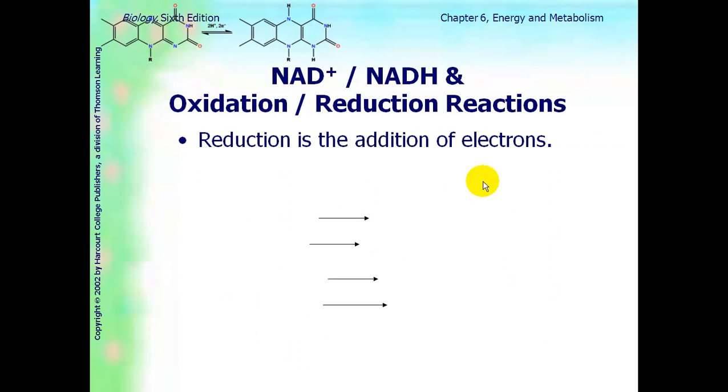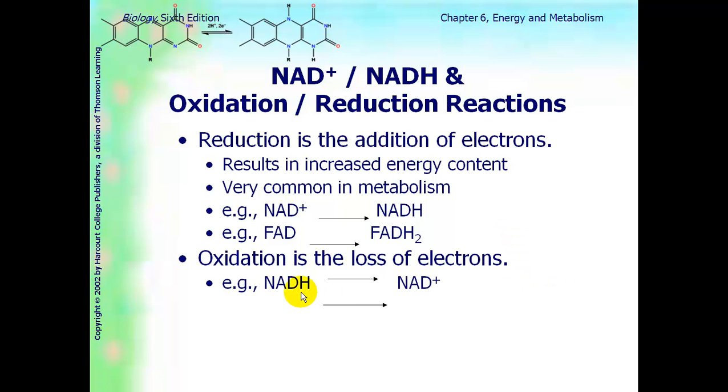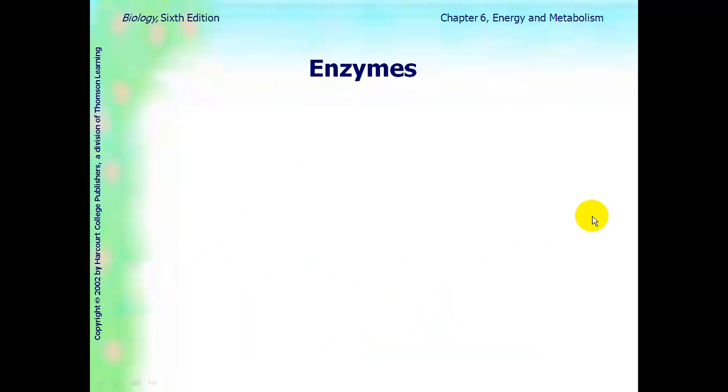So, these reactions that we're talking about are called oxidation and reduction. Reduction is the adding of electrons. Oxidation is the loss of an electron. For reduction, it results in increased energy. It's very common in metabolism. So, NAD plus would be reduced to NADH. FAD would be reduced to FADH2. And then oxidation is the opposite. It's a loss of the electrons. NADH can be broken down to NAD plus, and FADH2 can be broken down to FAD. Oxidation and reduction go hand-in-hand, and they're coupled together. When that happens, that is called redox. R-E-D for the reduction part. O-X is for the oxidation part.